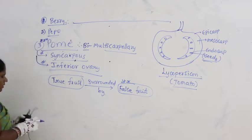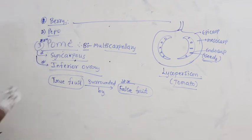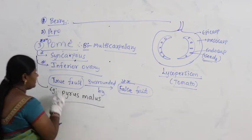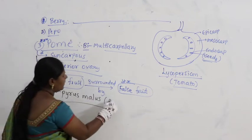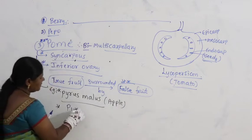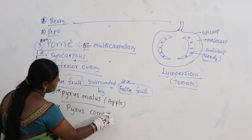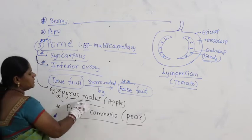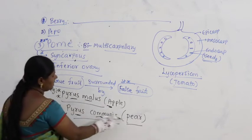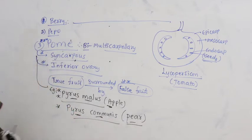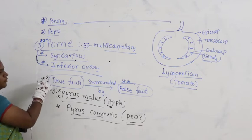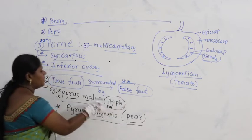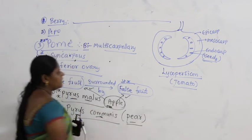True fruit is present and false fruit is also present — this is a very important feature called pome. Examples for pome: Pyrus malus — commonly called apple — and Pyrus communis — commonly called pear. In both, true fruit is surrounded by false fruit.